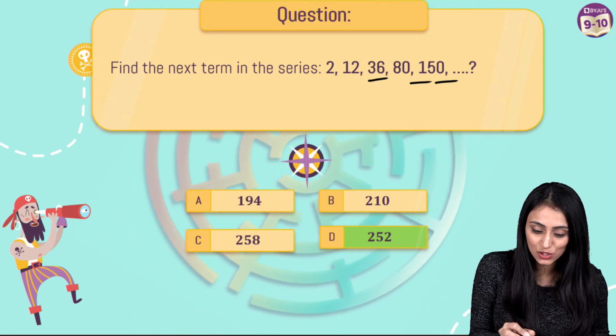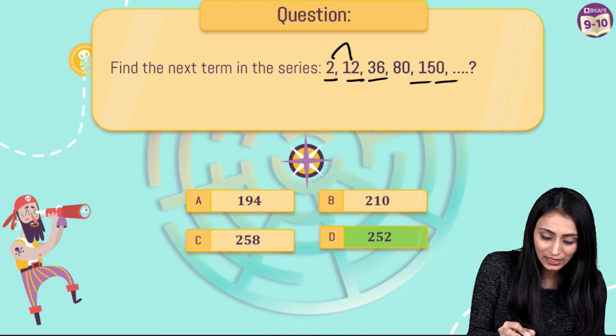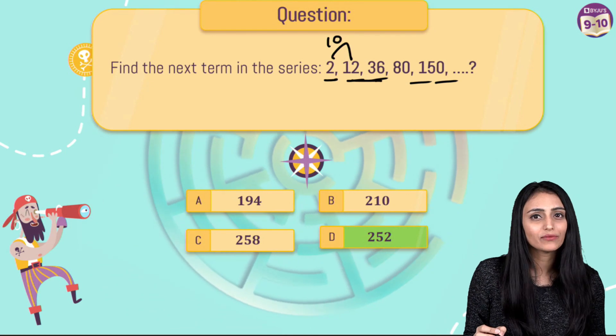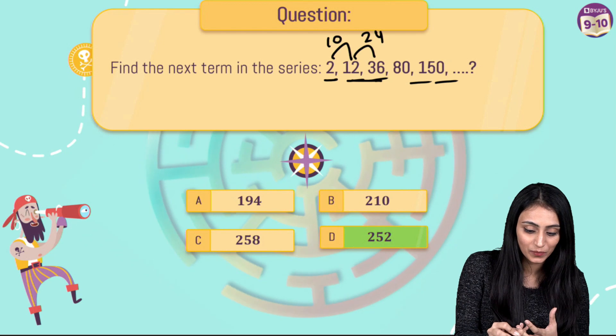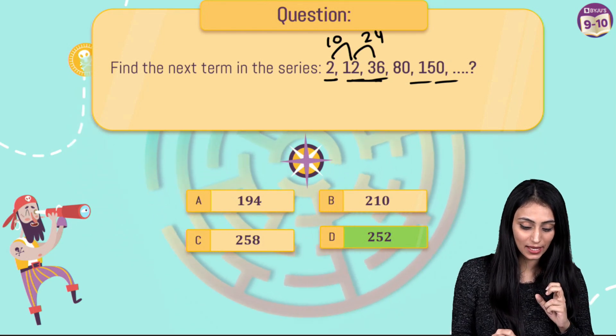So take a look at this series. This is 2, this is 12. There is a difference of 10 in between them. This is 12, this is 36. So the difference is 24 here. Like this you can see a pattern over here, right?